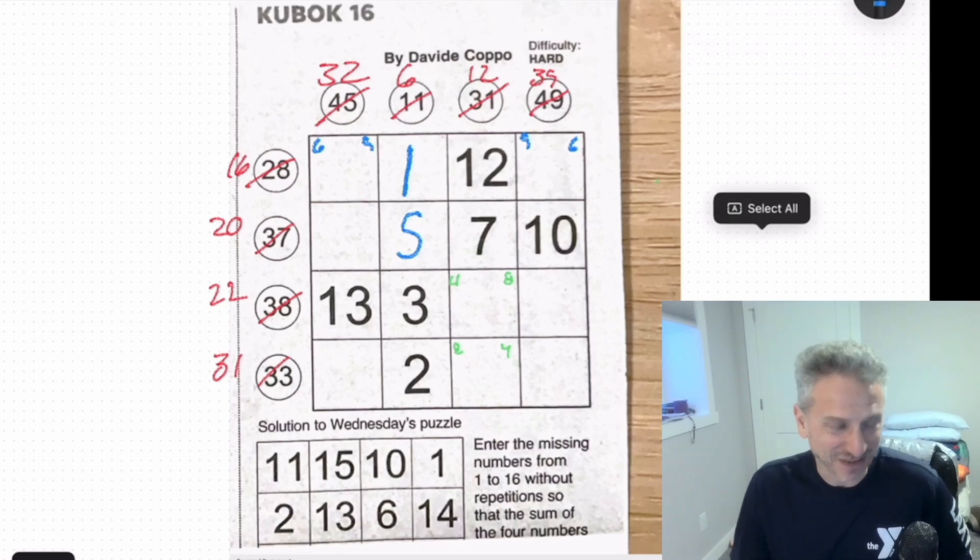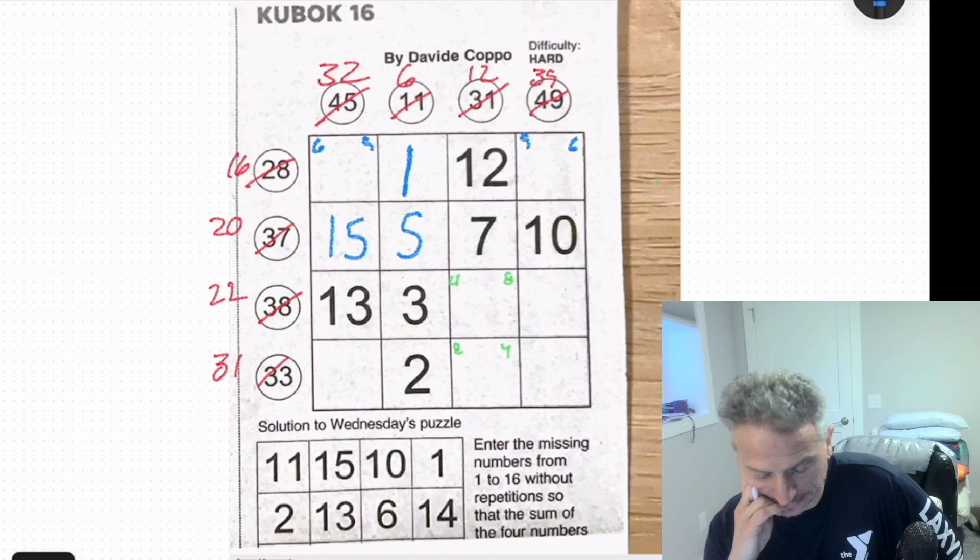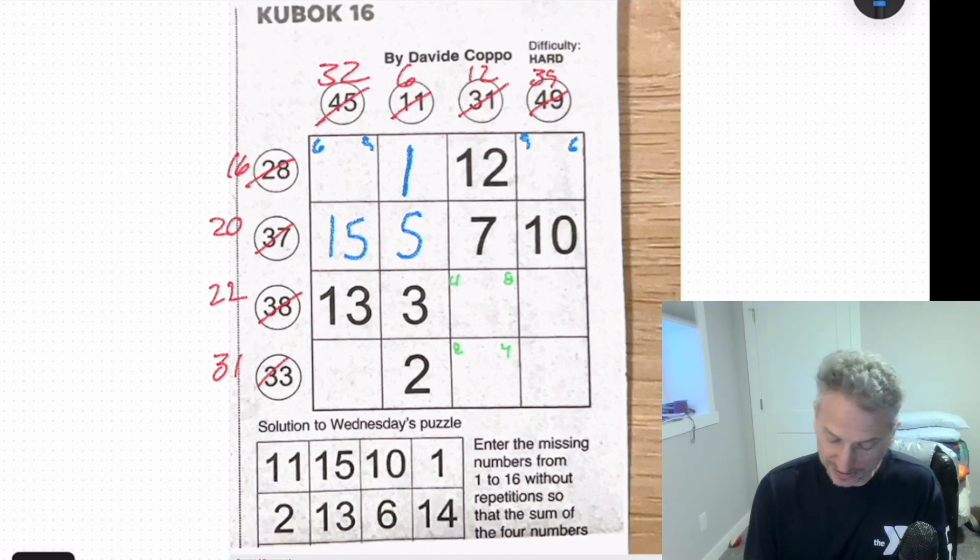Very nice. Oh, and of course we know this one, the five, seven, 10. So this is 15 and 13, three, 16, 22. It can't be that. Oh wait. I screwed that up. Can't be four. Yeah. So this is eight 14. This is four.